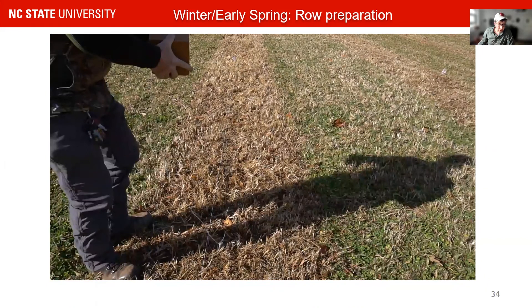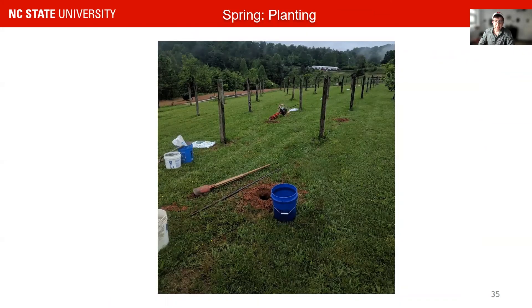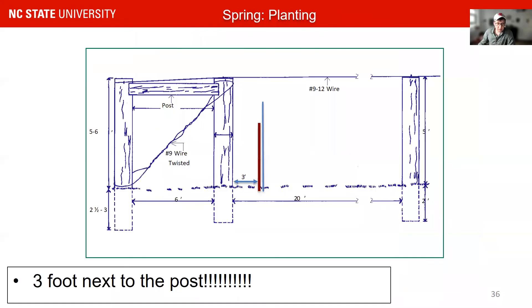Your posts need to go in with a post driver — we do not recommend augering in your posts, as those posts must be very stable in the ground. Try to get equipment from someone who has a post driver. End posts are typically five to six feet above the surface and about three feet below, while middle posts are about two feet below surface and five to six feet above. Cementing posts is an option, but a post driver is the tool of choice. Augering in posts will not result in a stable post structure.